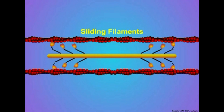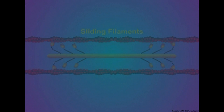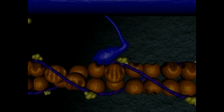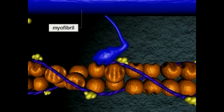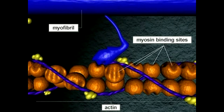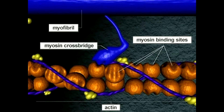We will look at the biochemical events related to actin-myosin binding. With calcium elevated around the myofibrils, myosin binding sites on actin are exposed, allowing interaction of the myosin crossbridges with actin.